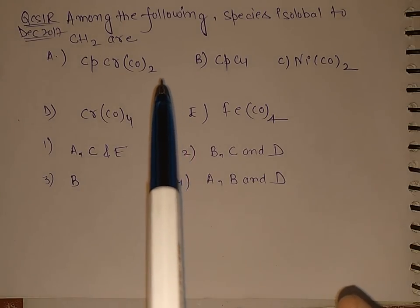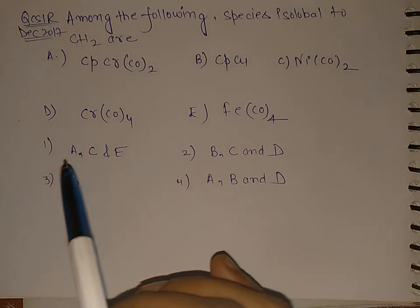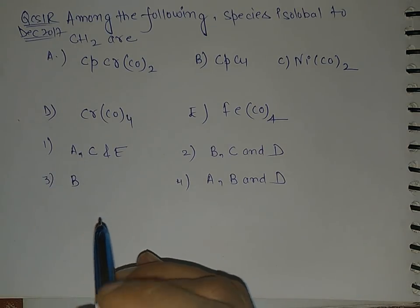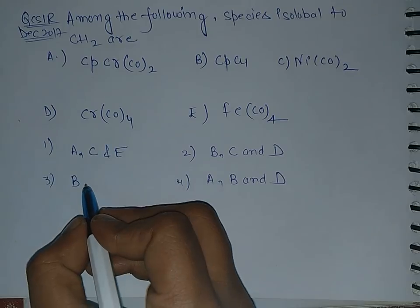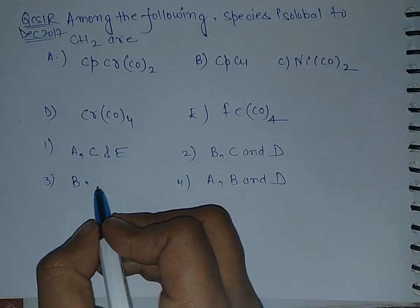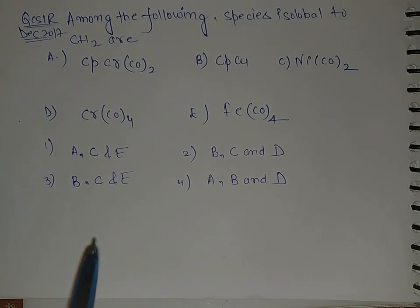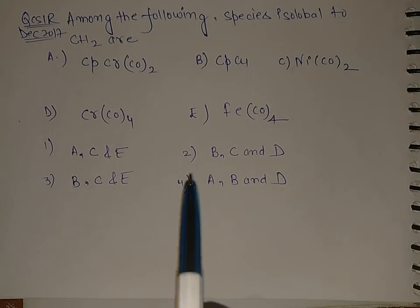The third option will be the answer if they do not acknowledge their mistake. The third option is B, C, and E. I forgot to write it, but third will be the answer.